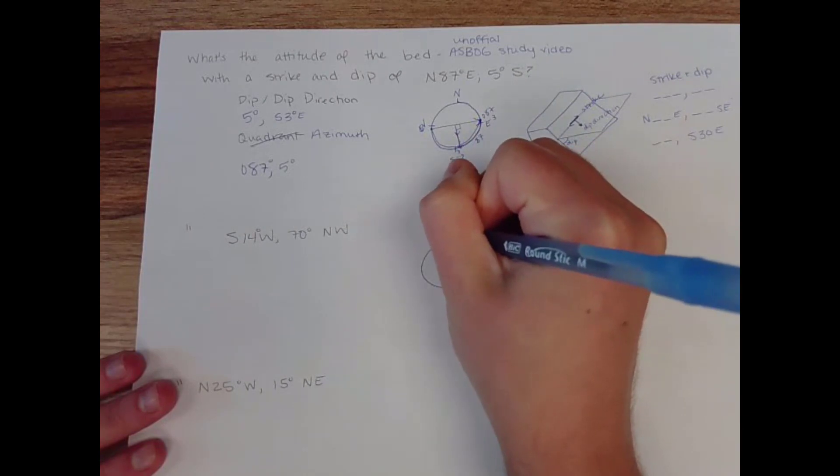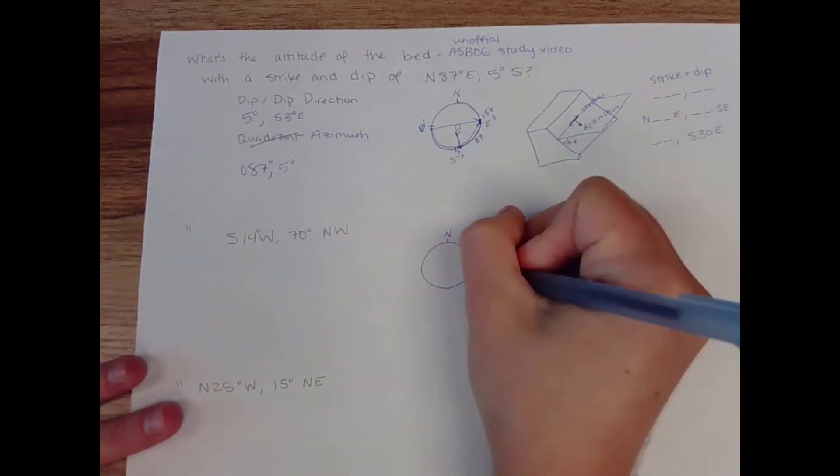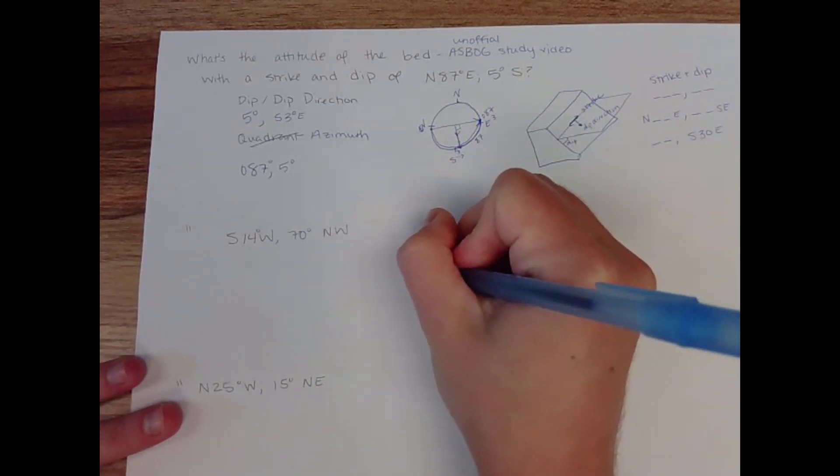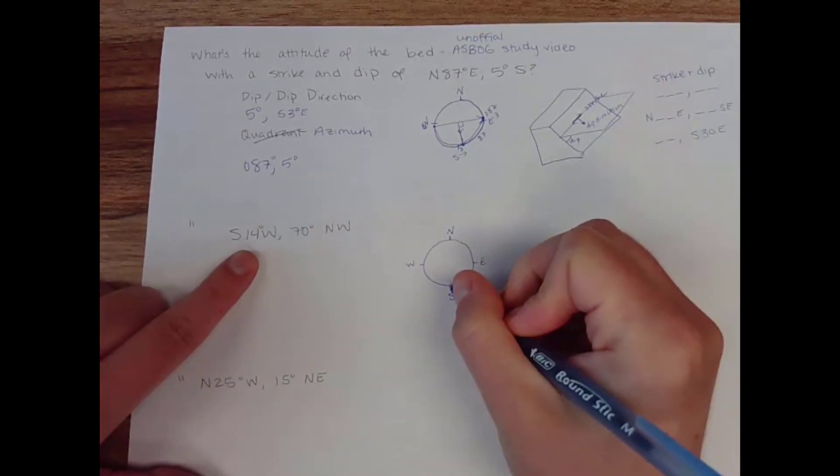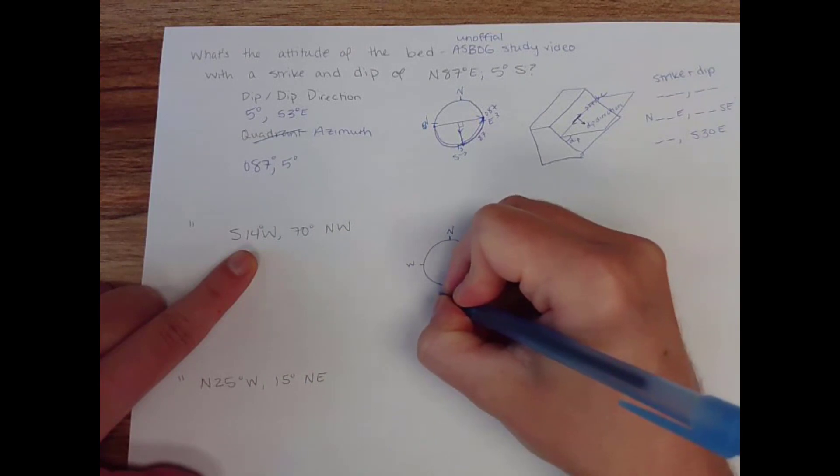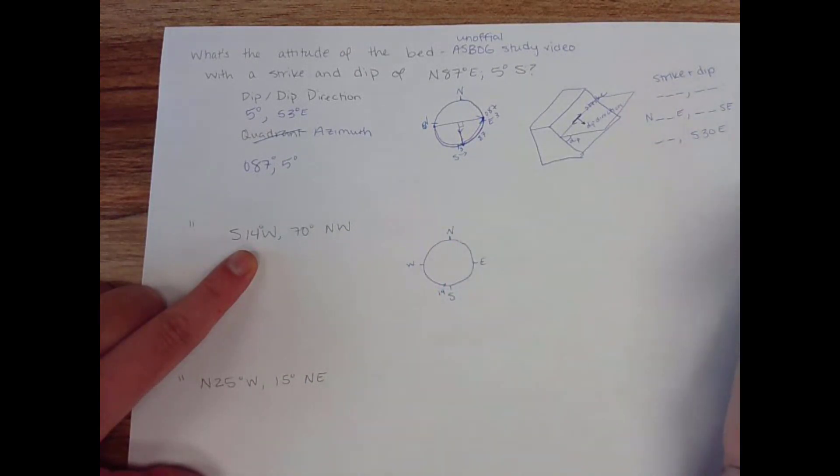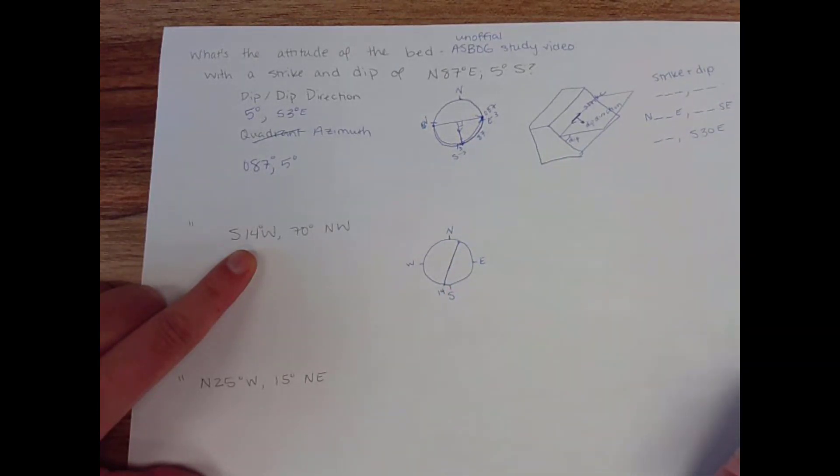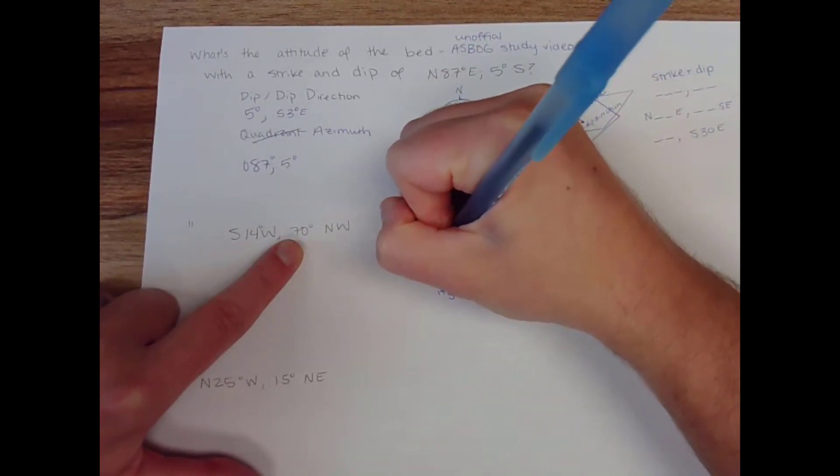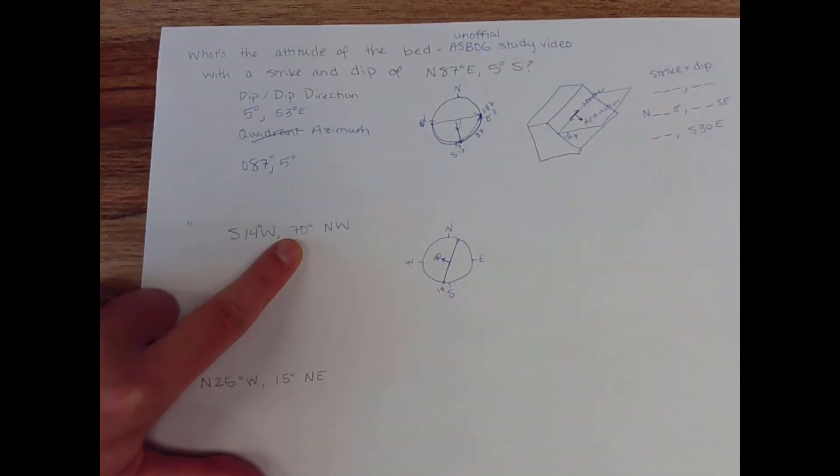As much as you're going to hate me, draw yourself a little picture. All right, south 14 west puts me right here. So this is my strike. And dipping 70 degrees to the northwest. So I am steeply dipping in that direction. This one does not follow the right-hand rule.